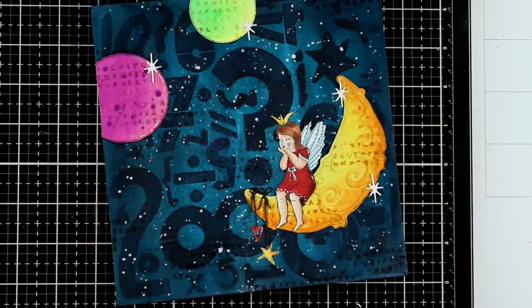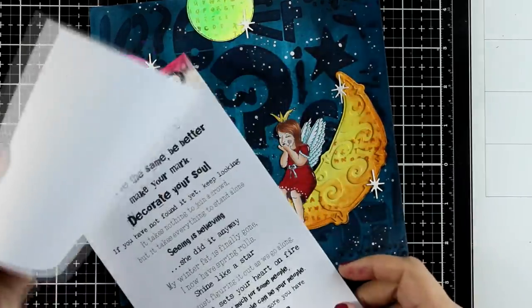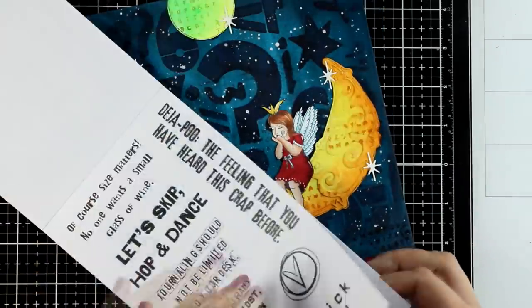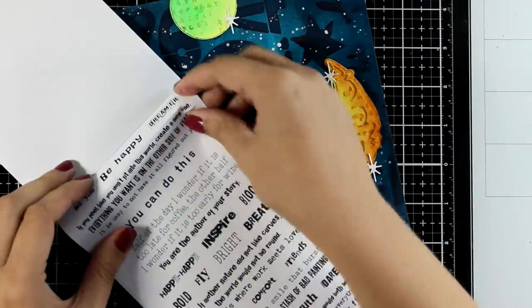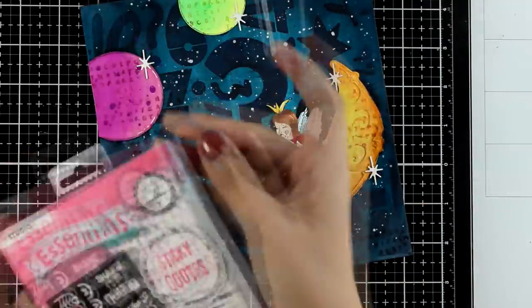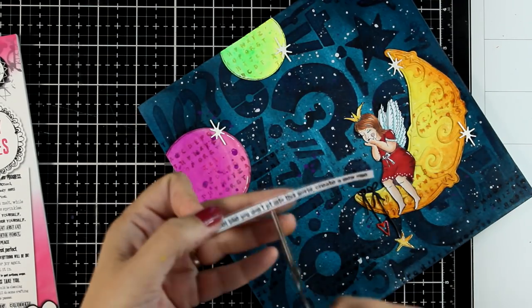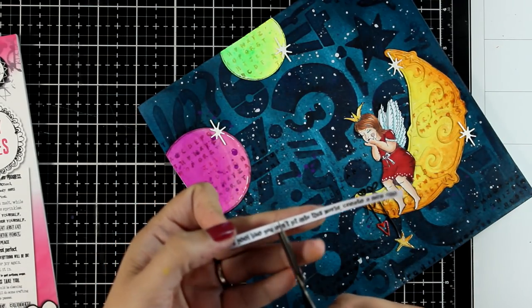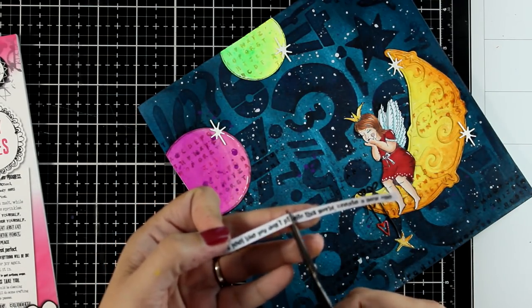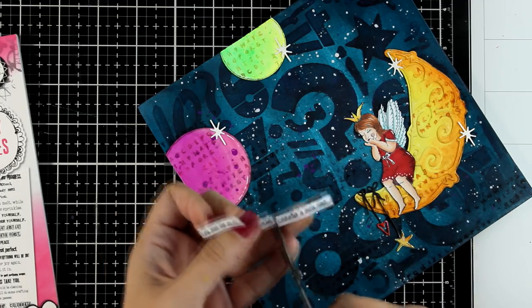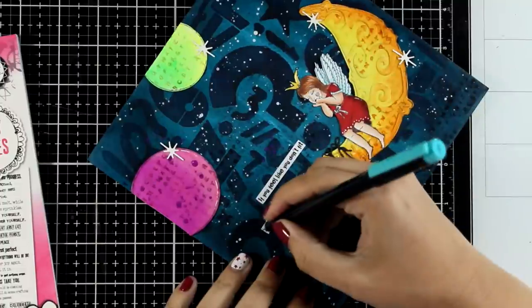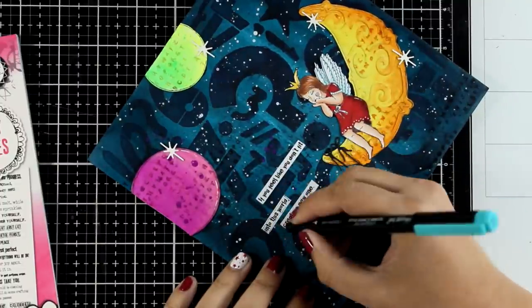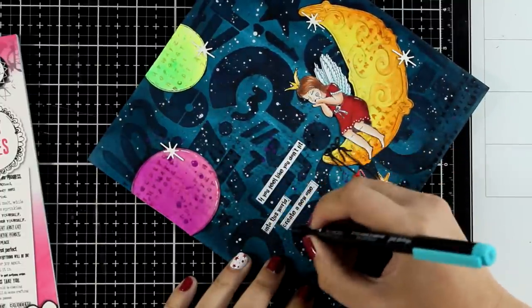I did add some highlights with my white gel pen in some areas. And now I am going to bring in my booklet with sentiments. This is from the Essential Collection. And I found one that says, if you feel like you don't fit into this world, create a new one. And I think it is perfect for this layout. I always like to cut out the phrases in smaller pieces. This way I have more flexibility on where and how I want to put them on the page rather than having a super big line of phrase. And then I like to go around them with a thin black marker just to outline them a little bit more.